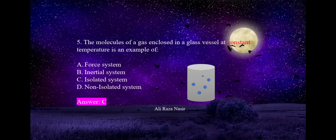Next: the molecules of a gas enclosed in a glass vessel at constant temperature is an example of — option A: force system, option B: inertial system, option C: isolated system, option D: non-isolated system. No external force is being applied from outside. In an isolated system, no external force acts. So option C is correct — this is an isolated system.